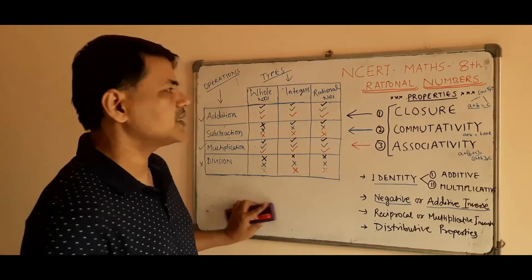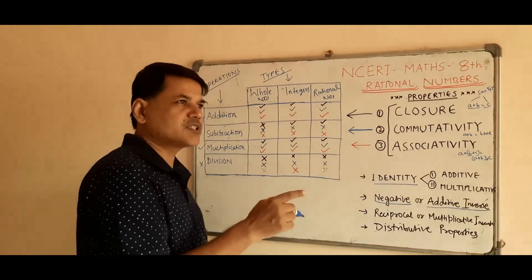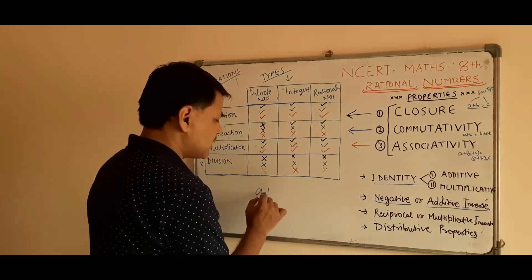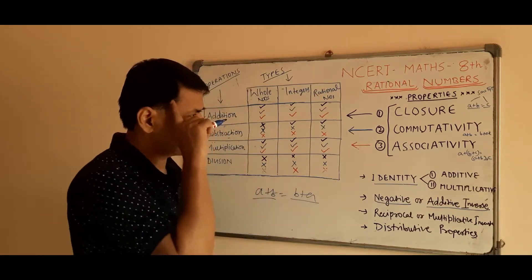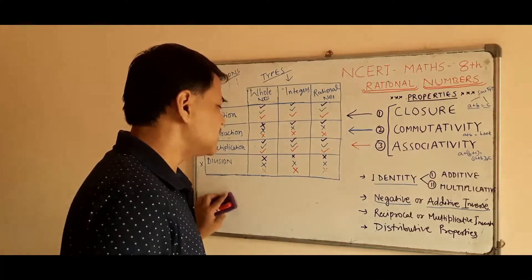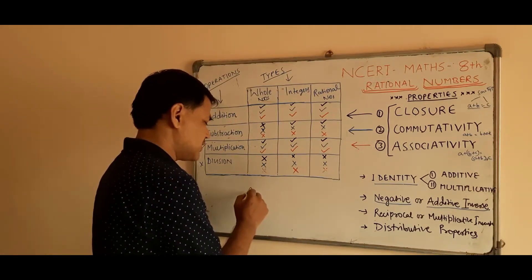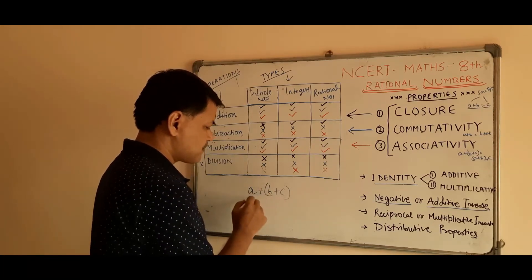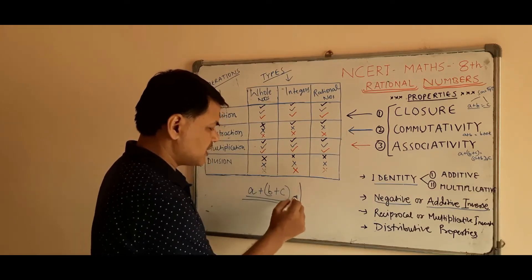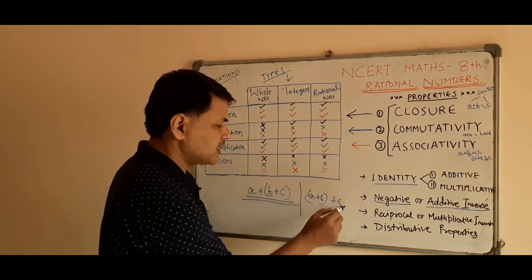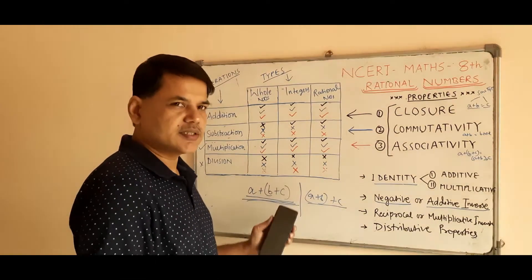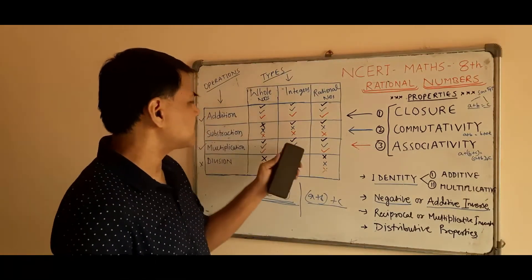So remember: in closure property we check if any operation results in the same type of numbers. In commutative property we check if swapping the numbers does not affect the result. Next, let's check associative property. Suppose we are adding a plus b plus c — we can group it as a plus (b plus c), or as (a plus b) plus c. If the result is the same regardless of grouping, then we say it is associative for that particular operation and type of number.